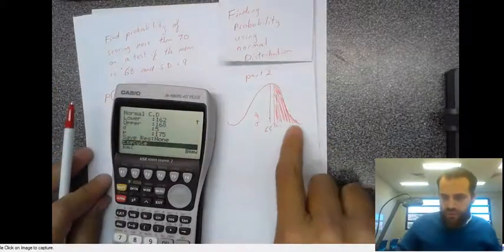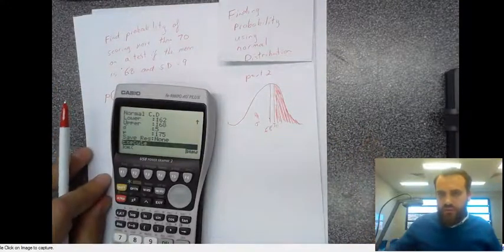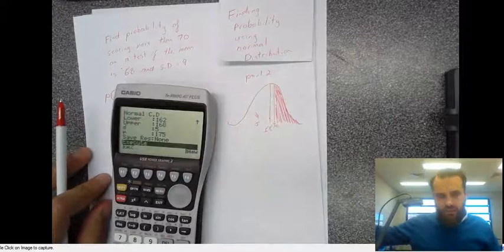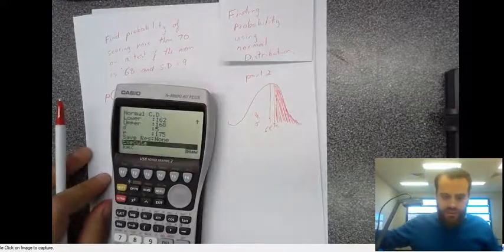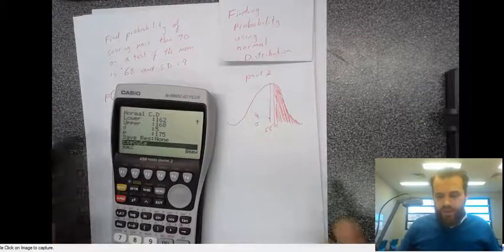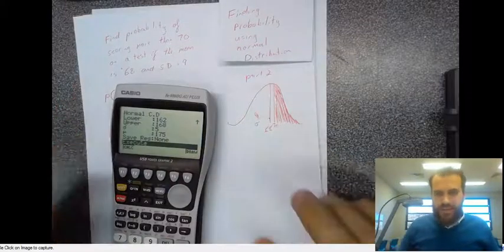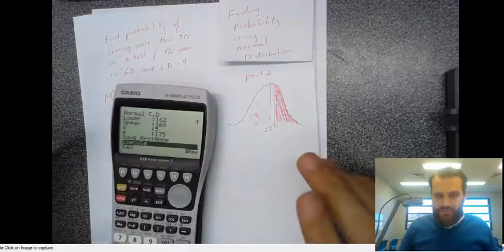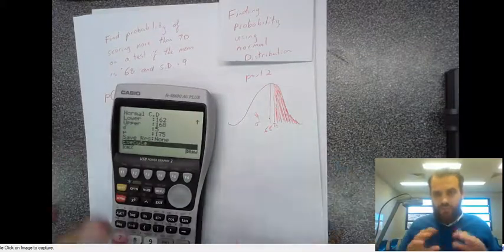The upper bound is more difficult because normal distributions actually go on forever. So there's no upper bound that makes sense. Problem.